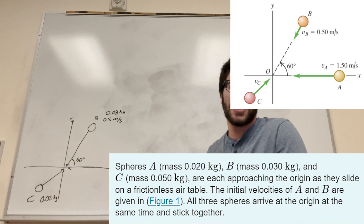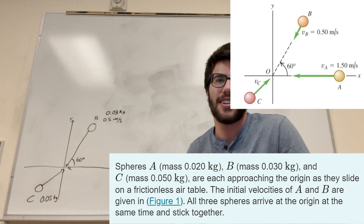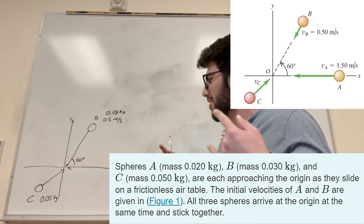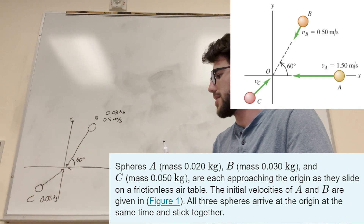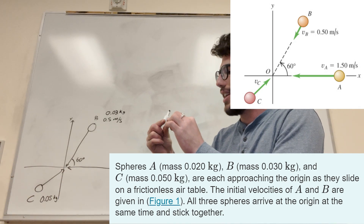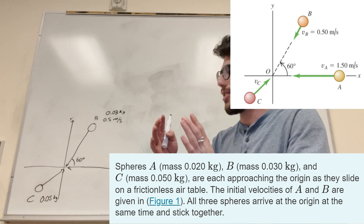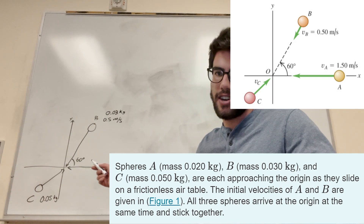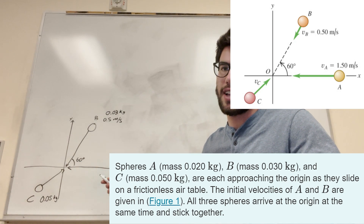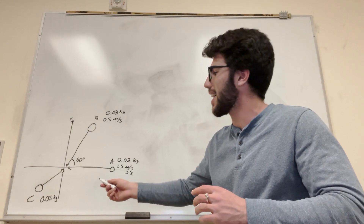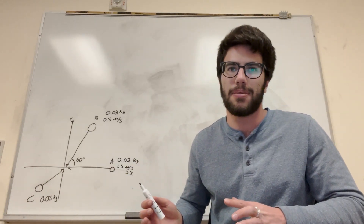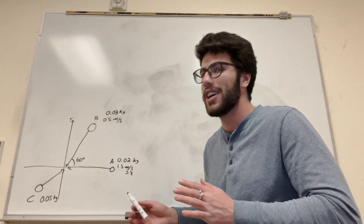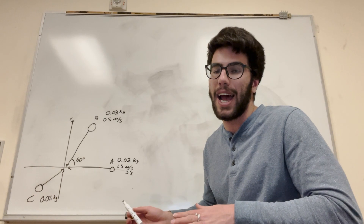Look at this beautiful graph I made. So you got these three balls, and they're going to collide in one point, and then they're all going to stick together and start moving in a positive x direction at half a meter a second. And it wants us to find the x component of the initial velocity in order to make that happen.